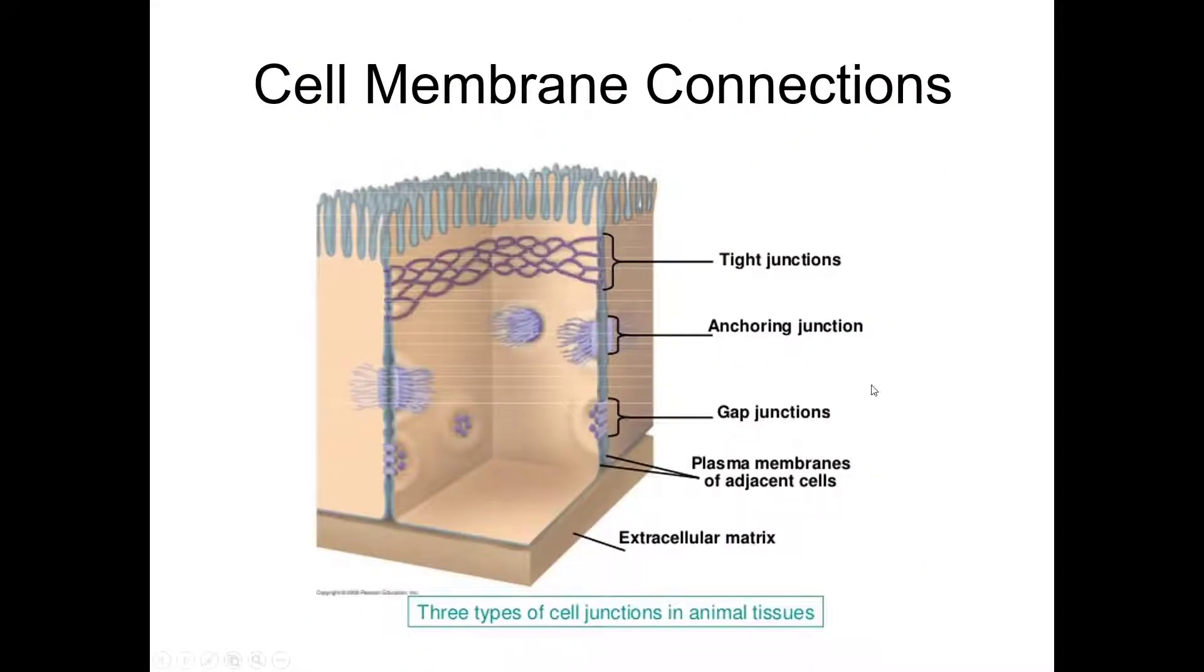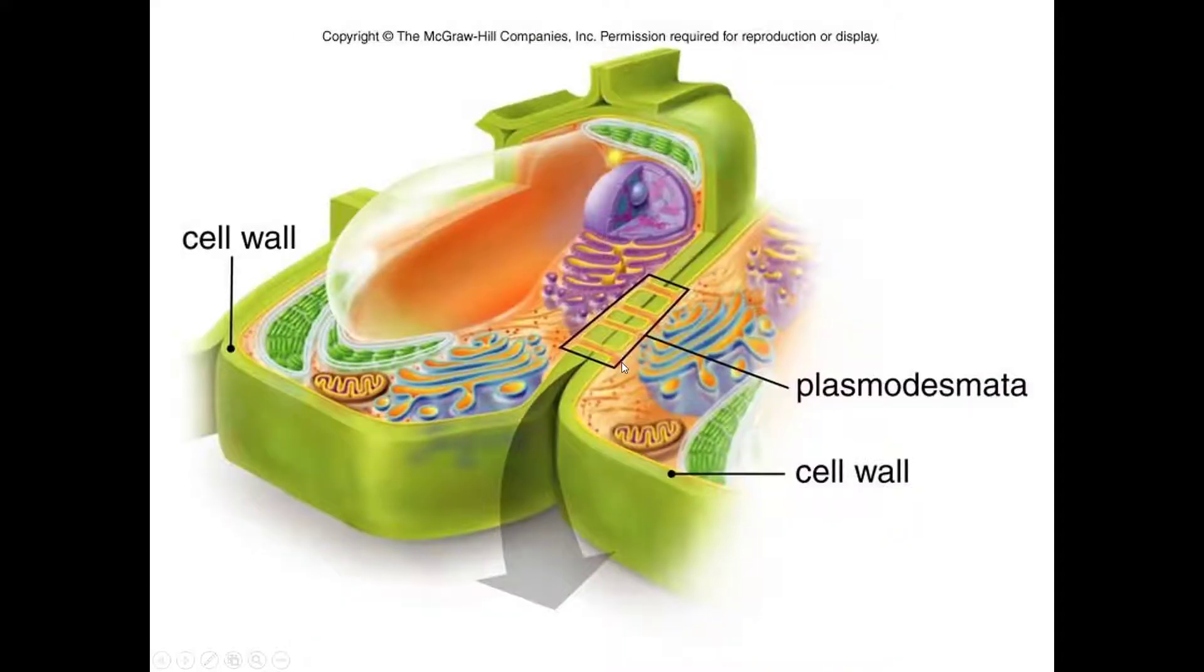Second question, we'll actually get into connections that cells make with one another. Though we're not going to talk about tissues in this class in biology, I want you at least be aware of how cells interact with one another. And so you have to know the difference between tight junctions, anchoring junctions, gap junctions, and plasmodesmata.